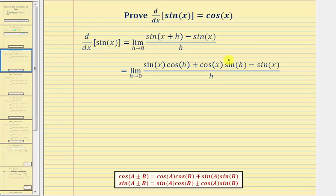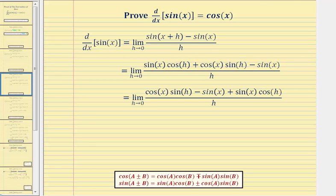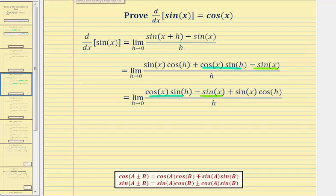For the next step, we're going to change the order of these three terms in the numerator. Notice here we wrote cosine x sine h first, followed by minus sine x, and then finally plus sine x cosine h.